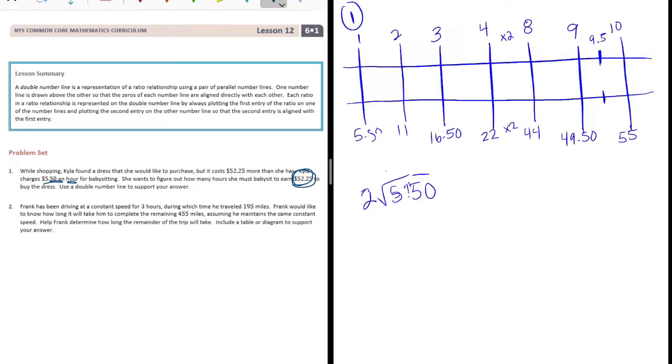Two goes into five two times. Two times two is four. If we subtract we get one. Bring down the five. Two goes into fifteen seven times. Seven times two is fourteen. Bring down the one, bring down the zero. Two goes into ten five times. So two times five is ten. Now we have no remainder, so half of that is two dollars and seventy-five cents.